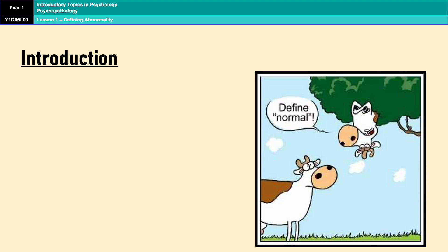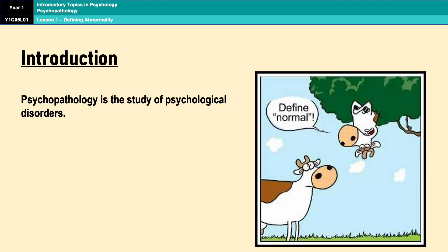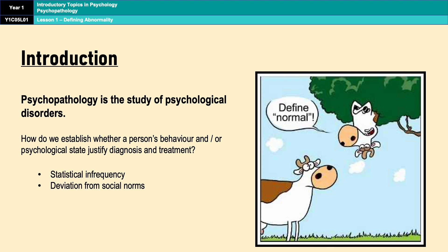Psychopathology is the study of psychological disorders, and so one of the first things that we have to do is determine how to decide whether a person's behaviour or psychological state, or both, are sufficiently unusual to justify a diagnosis and treatment. The four definitions all provide their own answer to that question. As with a lot of things in psychology, none of them are perfect, and none of them will work all of the time in all situations, but the definitions at least give us a starting point.